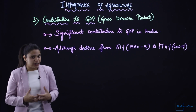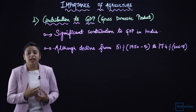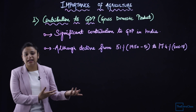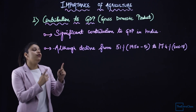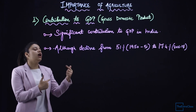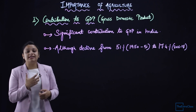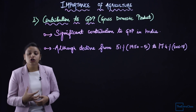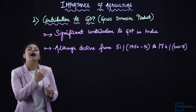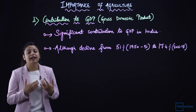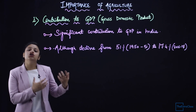We have also studied that in the agriculture sector, more people are employed, and its contribution is high — indicating a somewhat backward economy because job opportunities are not sufficient in other sectors. However, we have seen a significant decline from 51% in 1950 to 17.4% in 2016-17. This does not mean agriculture is unimportant; rather, it shows the country is growing because more job opportunities are now available in secondary and tertiary sectors.